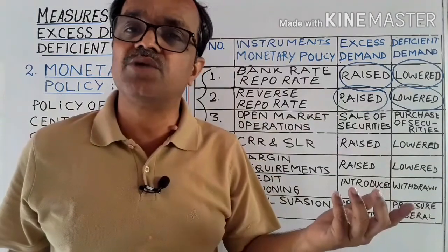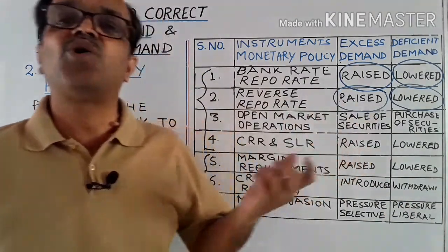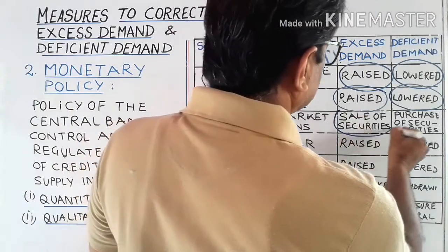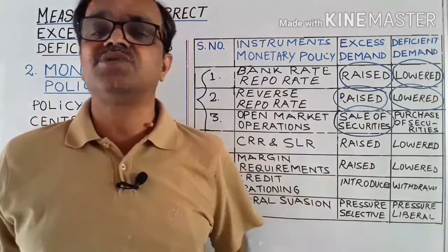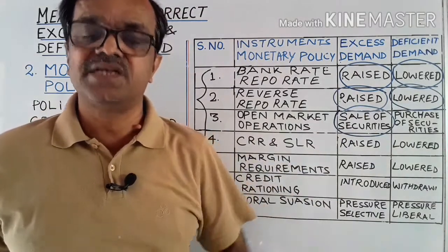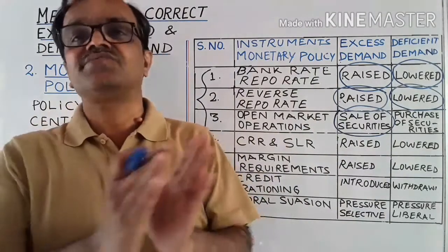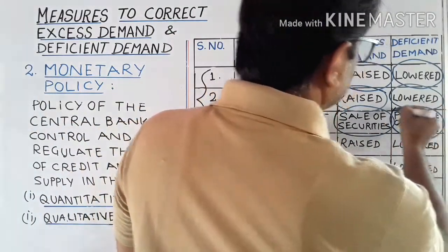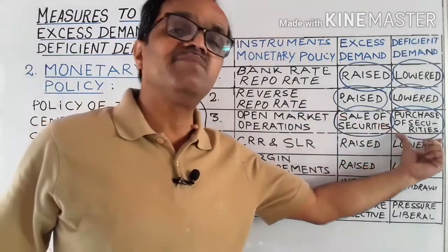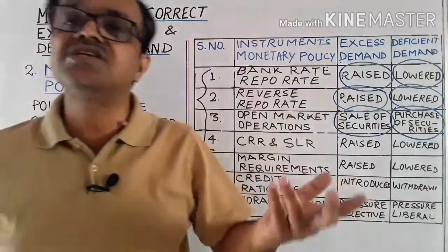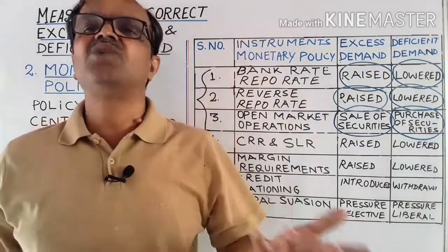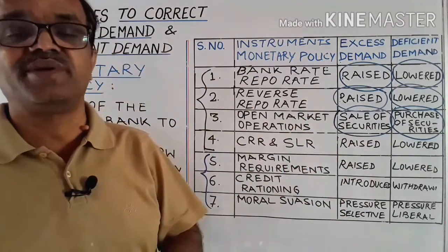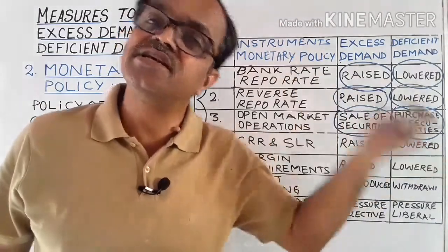Number three is open market operations — the sale and purchase of securities and bonds to commercial banks and the public. During excess demand, the central bank sells securities to commercial banks, decreasing their cash reserves and credit creation capacity, reducing money supply and aggregate demand. During deficient demand, the central bank purchases securities from commercial banks, paying them cash, increasing their cash reserves and credit creation capacity, so money supply and aggregate demand increase.